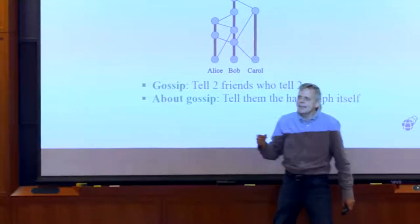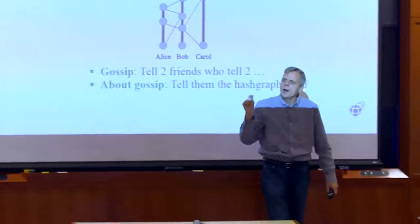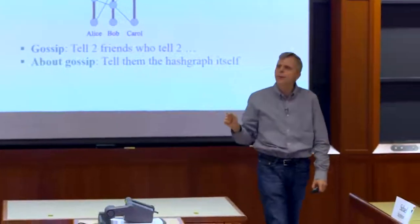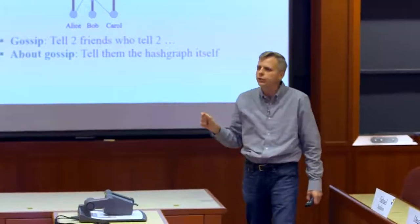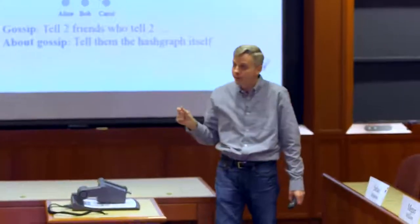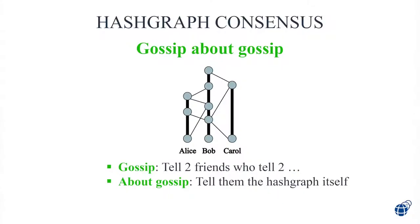So what I'm sending is a tiny bit beyond what I would have had to send anyway just to get the transactions out. But we now have this beautiful picture of history. It's cheap — almost for free. We still don't have consensus order though. There's still no consensus here — if you look at that picture, you can't put the circles in order yet.